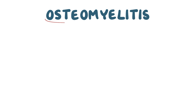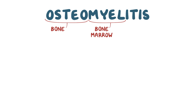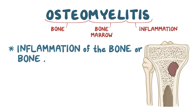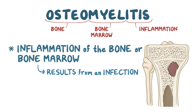The word osteomyelitis can be broken down. Osteo refers to bones, myel stands for myelo and relates to the bone marrow, and itis refers to inflammation. So osteomyelitis is an inflammation of the bone or bone marrow, and it typically results from an infection.